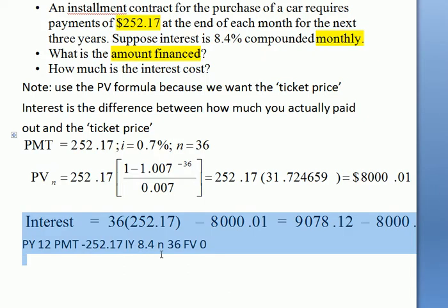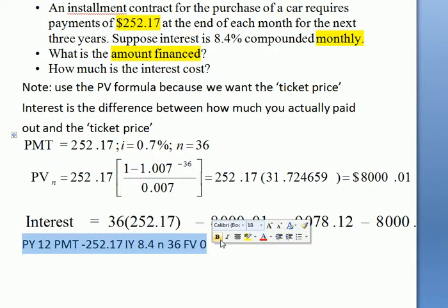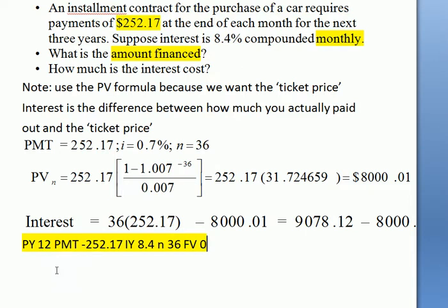Here, underneath, I'm doing it by the calculator method, which I have to say is a lot easier. PY is 12, there are 12 payments in a year. PMT, negative 252.17 because in your account books that's a payment going out each time.